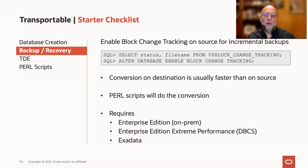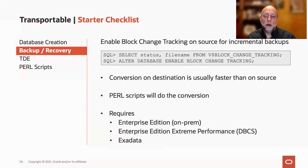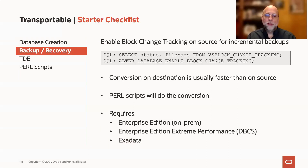When you're doing the conversion of incremental backups — whether it's your level zero or level one backups — it generally makes sense to do that conversion on the target system, because your new target hardware is generally much faster than your old server. That's often why you're migrating in the first place. Use the Perl scripts where possible to do the conversion, and take advantage of the automation that the scripts provide, because more automation means less human error. This does require Enterprise Edition on-premises, or Enterprise Edition Extreme Performance in the cloud, or being on Exadata.